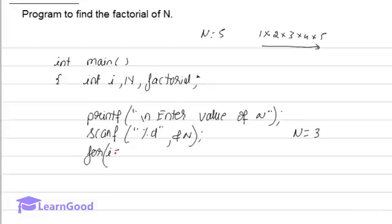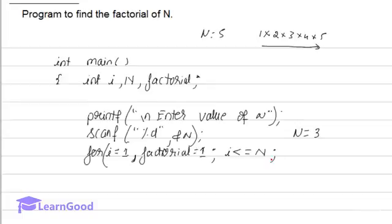The i value will start from 1 and the factorial value is also initialized to 1. Because there are two initializations, we separate them by a comma. The condition is that i has to go up to n, so i is less than or equal to n. And the increment is i++.